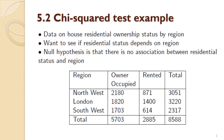Here we have an example on residential ownership by state and region, and you want to see if residential status depends on region. The null hypothesis is that there is no association between residential status and region. You first assume there's no relationship and then look for evidence against that. If you reject the null hypothesis, you conclude there is a relationship. In the UK, London house prices are famous for being very expensive, so you'd expect relatively few people own their own homes — most people would rent.